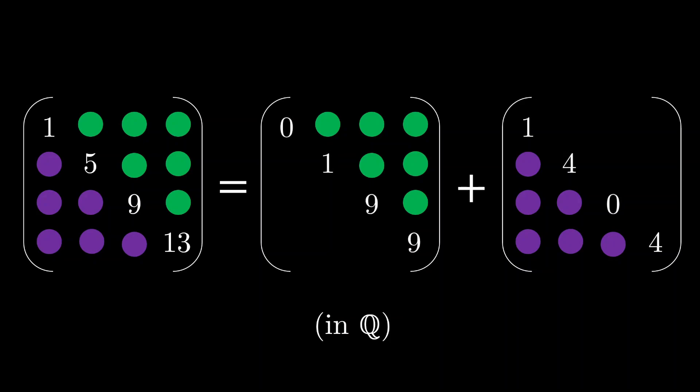The number 1 can be written as 0 plus 1 and the number 5 is 1 plus 4. The number 9 is 9 plus 0 and the number 13 is 9 plus 4. So actually the numbers 1, 5, 9 and 13 were chosen because they are sums of two squares and they appear to form an arithmetic progression simply to trick you.